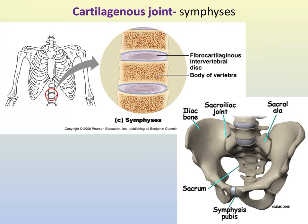The symphysis involves fibrocartilage. Fibrocartilage is found in two places in the body in terms of the symphysis: the intervertebral discs and the pubic symphysis. Both of these are slightly movable — both are considered amphiarthrotic.